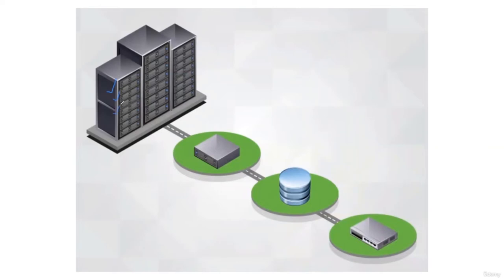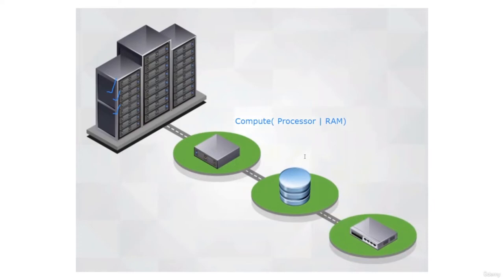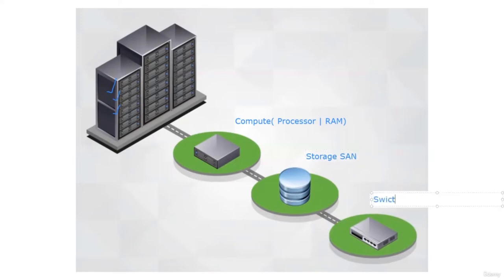Inside these servers, the major components are compute — which includes the processor and RAM or memory — and the second component is storage. We generally use the term SAN, Storage Area Networks, for enterprise data centers. The third important component used for connectivity is switches, routers, and firewalls. So when we visit inside the data center of any vendor — Google, Amazon, Microsoft, Rackspace, Alibaba Cloud — the infrastructure generally consists of compute, Storage Area Networks, switches, routers, and firewalls. Behind the scenes, the traditional infrastructure is running in the same manner.